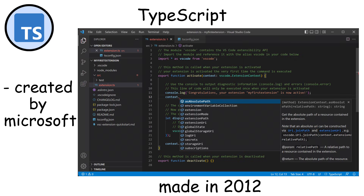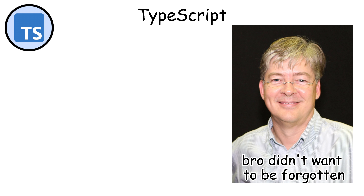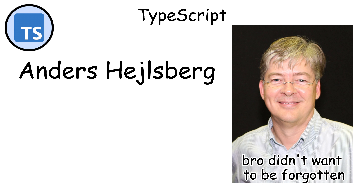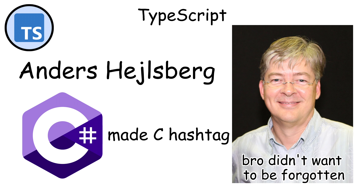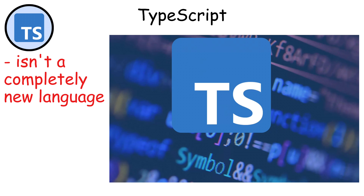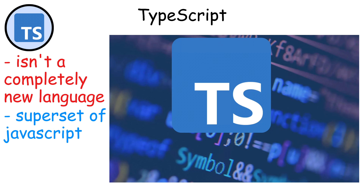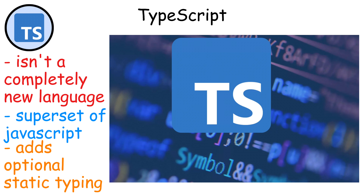TypeScript was created by Microsoft in 2012 and was led by Anders Heilsberg, the same person who created C-sharp. TypeScript isn't a completely new language — instead, it's a superset of JavaScript that adds optional static typing.